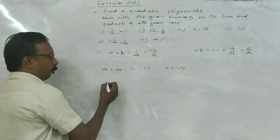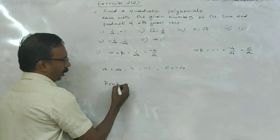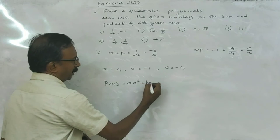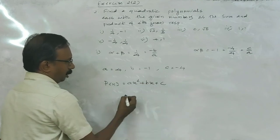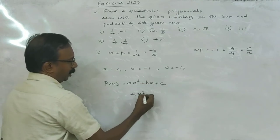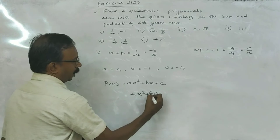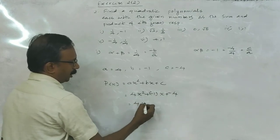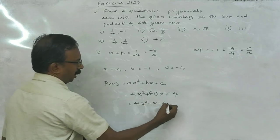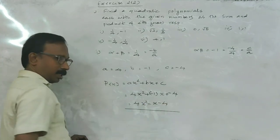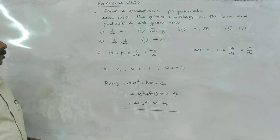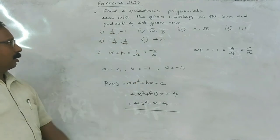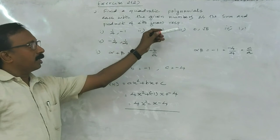The general form of the quadratic polynomial is AX squared plus BX plus C. So A is 4, so 4X squared; B is minus 1, so minus X; C is minus 4. So 4X squared minus X minus 4 is the polynomial, isn't it? This way we can find the polynomial in all these cases.